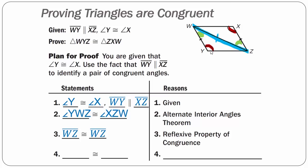I now have three pieces of information: two angles and a side. I notice that the side is not between the two congruent angles, so I can say that triangle WYZ is congruent to triangle ZXW using the Angle-Angle-Side Congruence Theorem — an angle, an angle, and a side congruent to an angle, an angle, and a side not between the two angles.